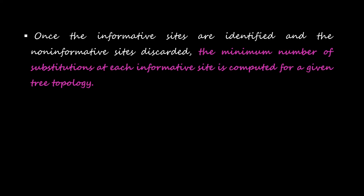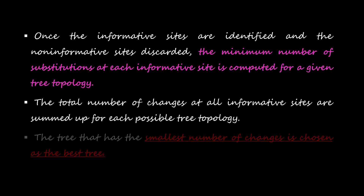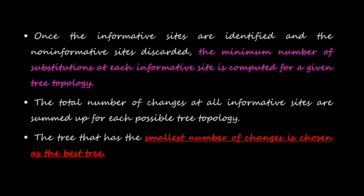Once informative sites are identified and non-informative sites discarded, the minimum number of substitutions at each informative site is computed for a given tree topology. The total number of changes across all informative sites is summed up for each possible tree topology. The tree with the smallest total number of changes is chosen as the best tree.